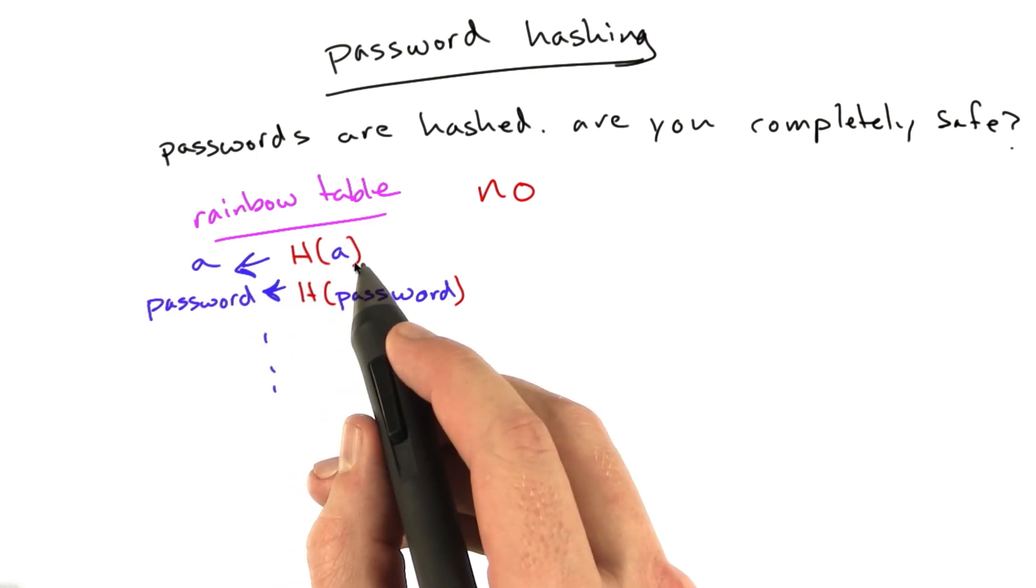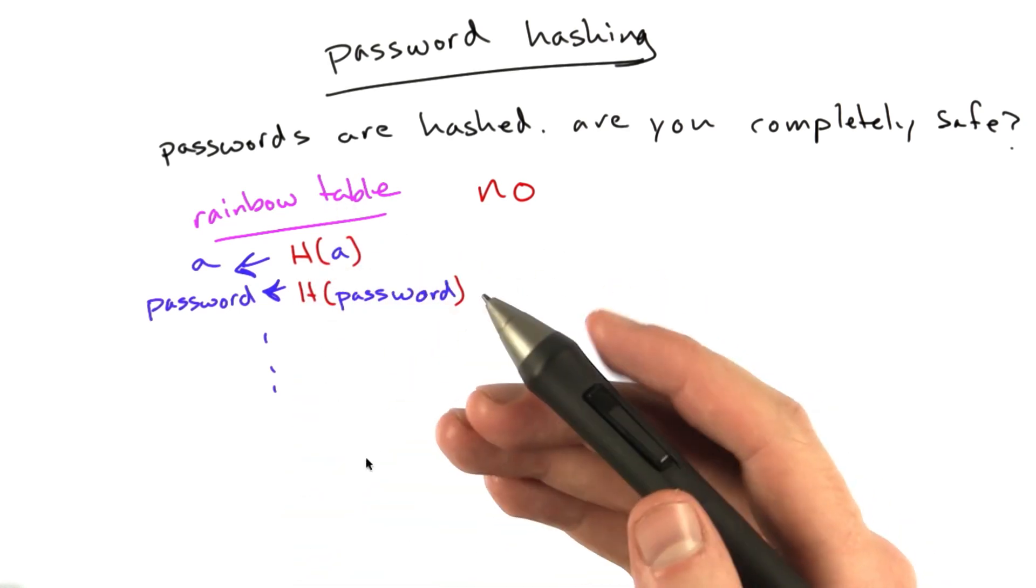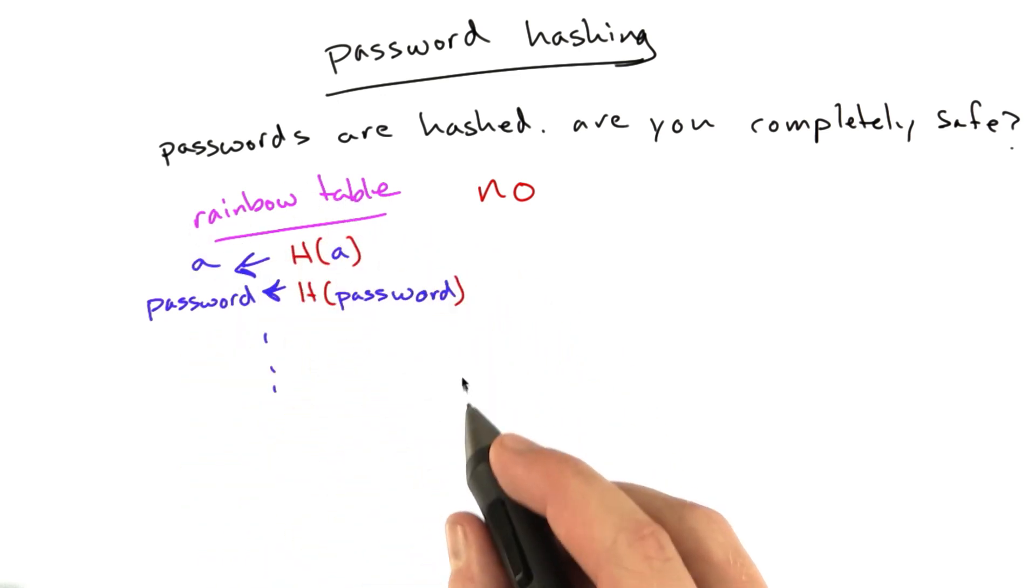You may remember from our cookie approach that all we have to do is add in some secrets. But we don't want to add in the same secret over and over again. Otherwise, you're basically vulnerable to the same very similar technique. So what we do instead is we use something called a salt.